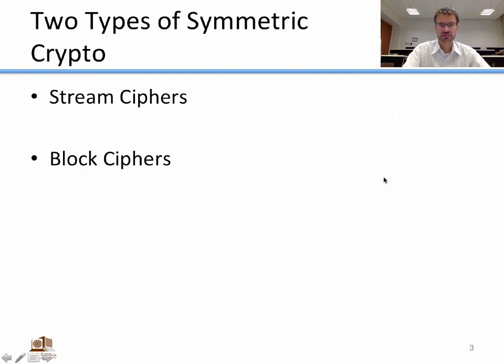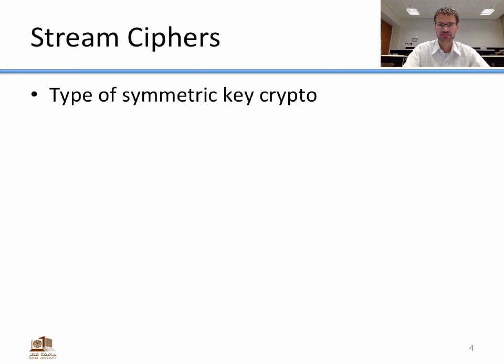There are two types of symmetric key cryptography: stream ciphers and block ciphers, and we're going to talk about both of those in this lecture.